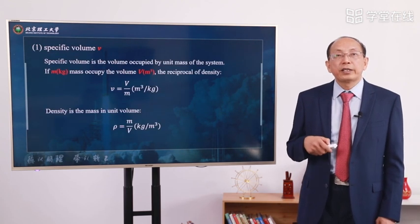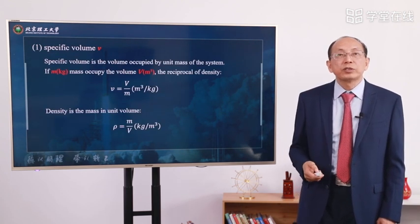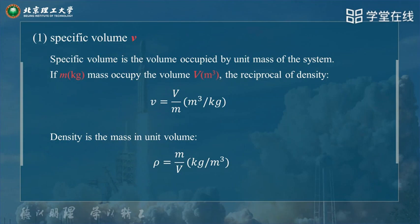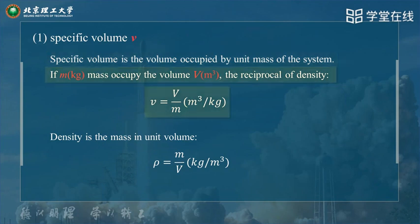First, we give an introduction about specific volume V. Specific volume is the volume occupied by unit mass of a system. If in the system there is some mass M occupying volume V — the unit is cubic meters — so specific volume is capital V over M.